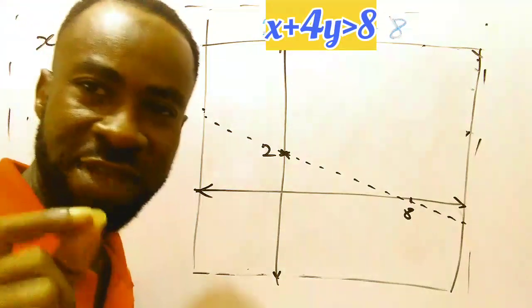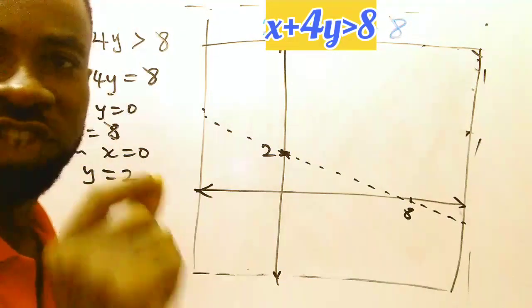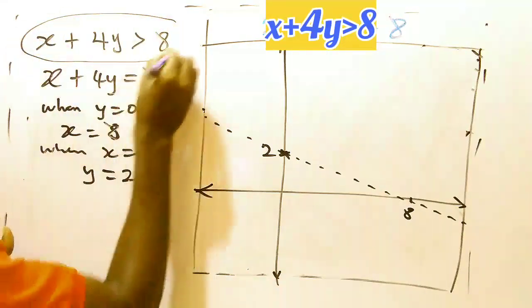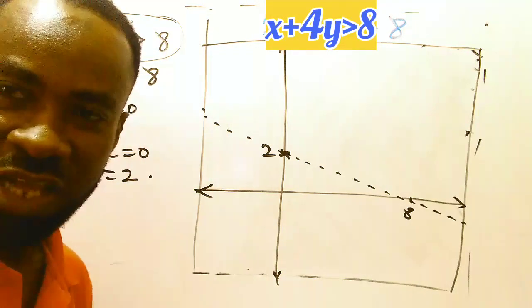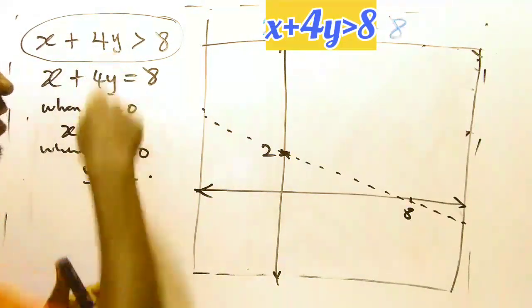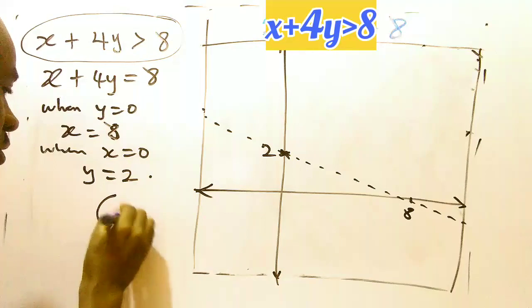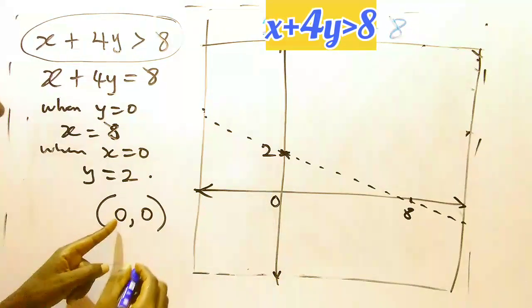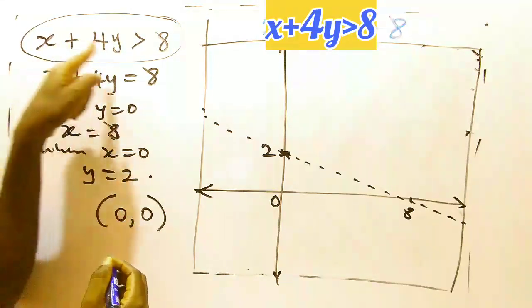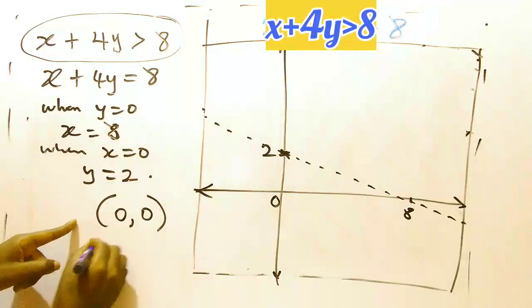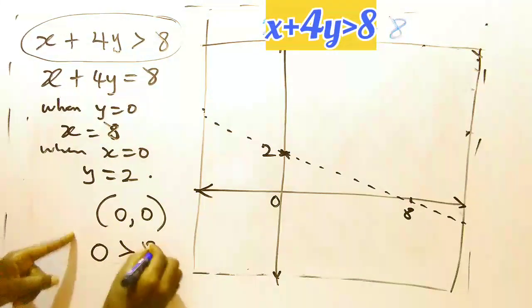After doing that, next thing to do is to test your validity. Check if this inequality is valid. How do you do that? Just put where x is 0, y is 0, which means we are using the origin. This origin here. So where x is 0, y is 0, put it here. If x is 0, y is 0, this whole inequality becomes 0 is greater than 8.